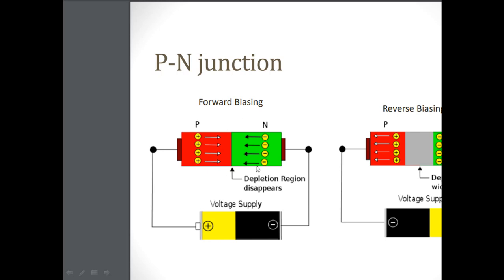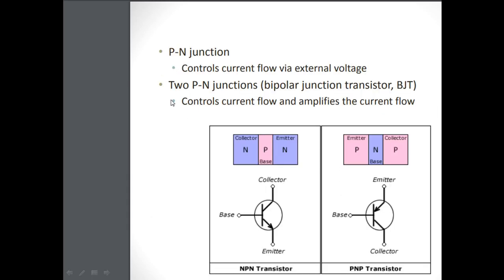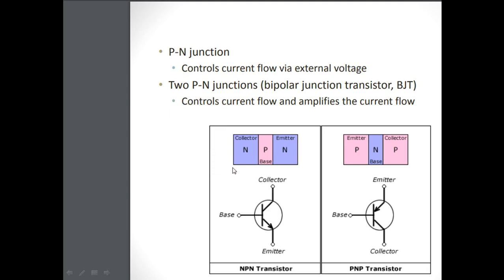If you apply forward bias to a PN junction, the depletion region disappears and current conducts. If you apply reverse bias, the width of the depletion region increases, making it an open circuit — so there is no conduction of current. In forward bias, there is maximum conduction. This is a quick review of the PN junction diode before we move into the transistor.